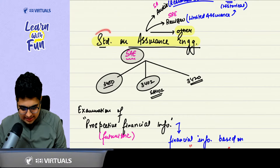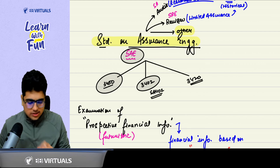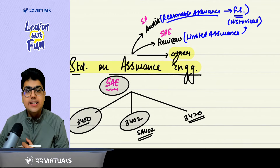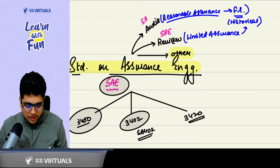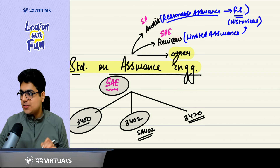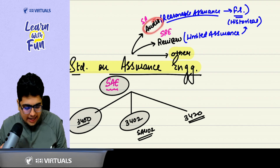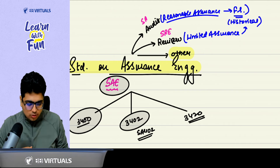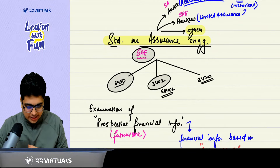This is the Standard on Assurance Engagement. What is special about these standards? They cover other types of assurance engagements. Do they cover audit? No — audit is covered by Standards on Auditing. Do they cover review? No — review is covered by SRE. Audit and review are about historical financial information. SAE covers the other types of assurance engagement.